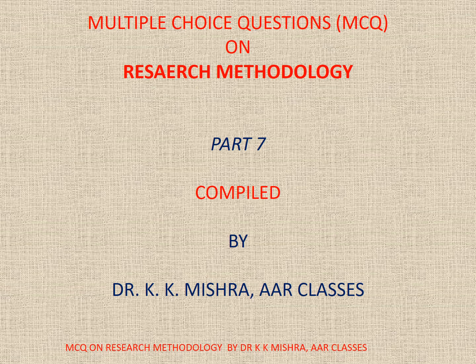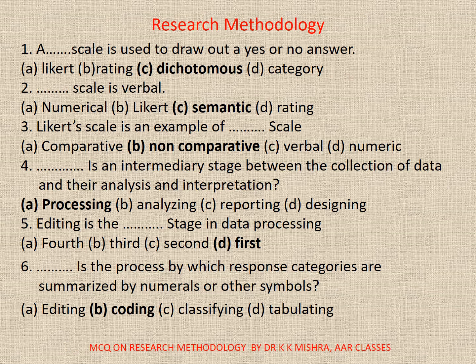Now come to the questions. Question number 1: A dash scale is used to draw out a yes or no answer. A. Likert. B. Rating. C. Dichotomous. D. Category. Correct option is C. Dichotomous.